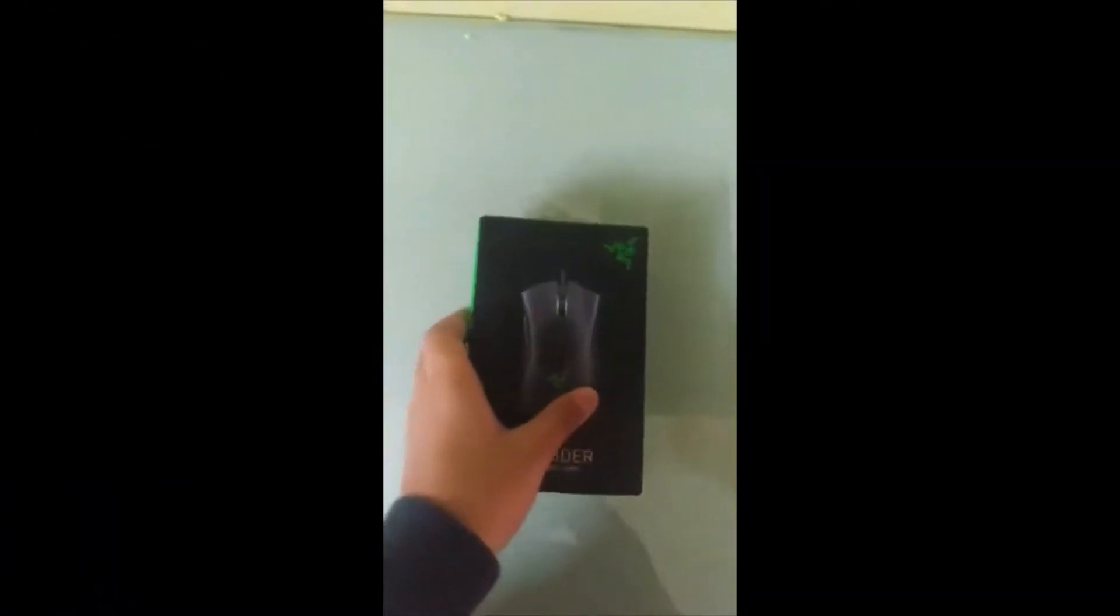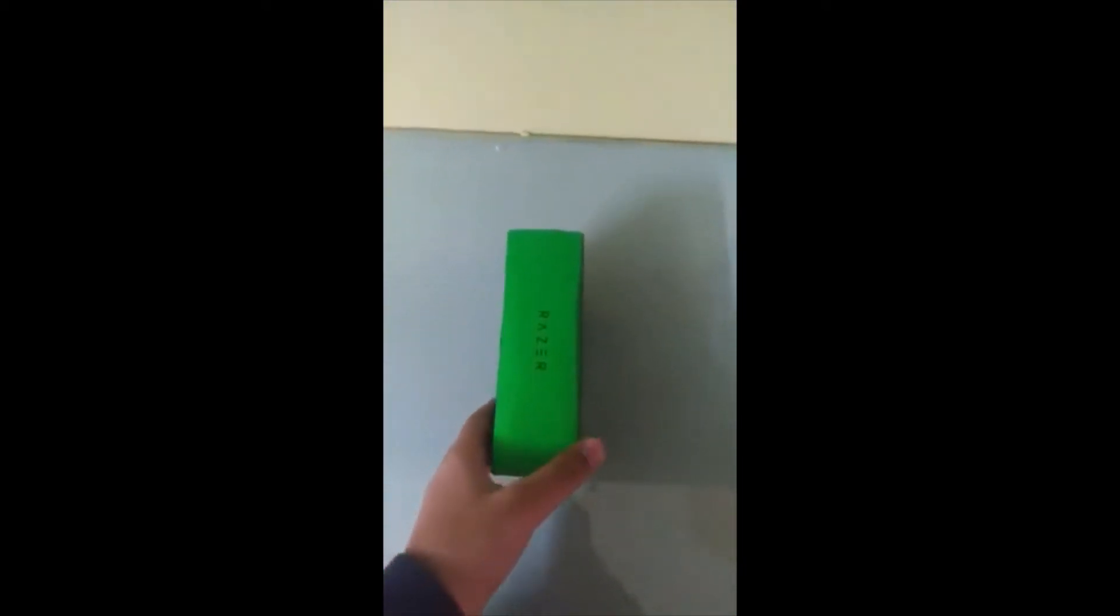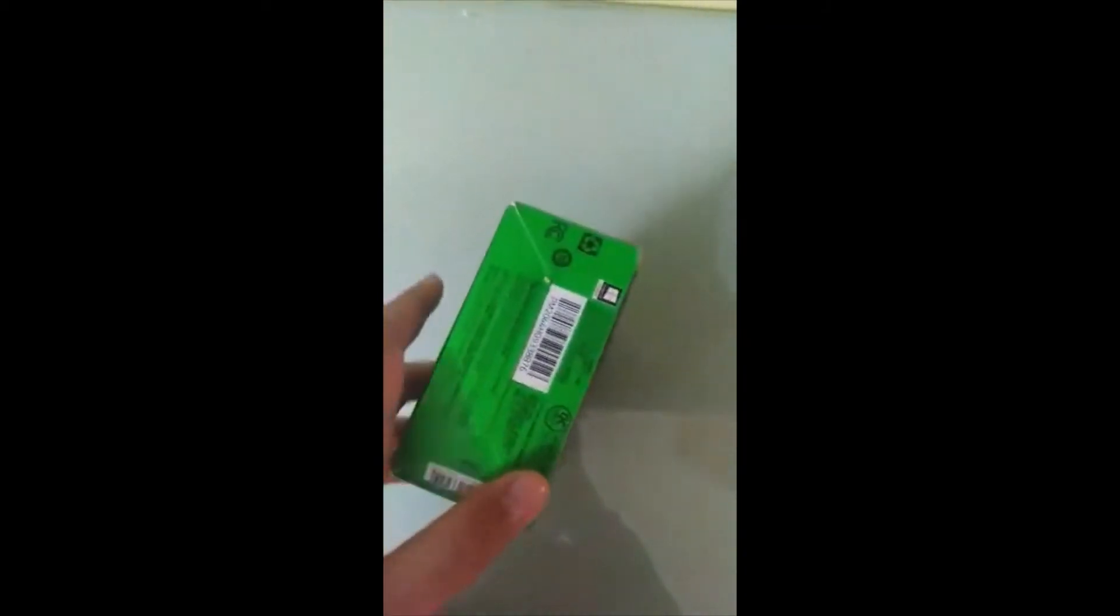So let's see the box. Here you can see the box, green color box, Razer DeathAdder Essential. Here you can see the back side, up and front. So I am alone and going to unbox it with my one hand, so please adjust.